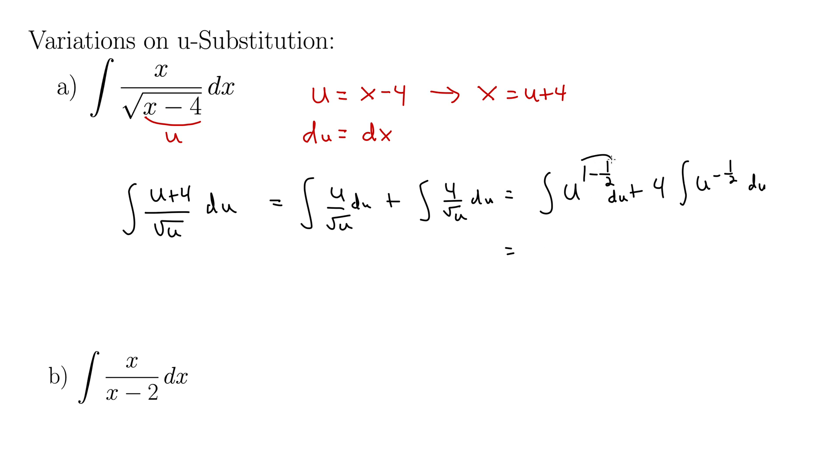Well, this is u to the 1 half up here in the first integral, so when we integrate that we use the power rule. That's going to be u to the 3 halves, adding 1 to 1 half, and then we multiply by the reciprocal out front, 2 thirds. Plus 4 times, now we're adding 1 to negative 1 half, so that gives us u to the 1 half, and now multiply by the reciprocal, times 2, 2 over 1, which gives us 8 essentially.